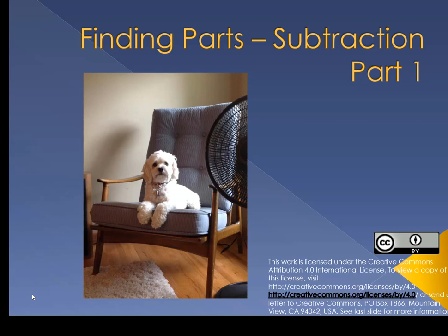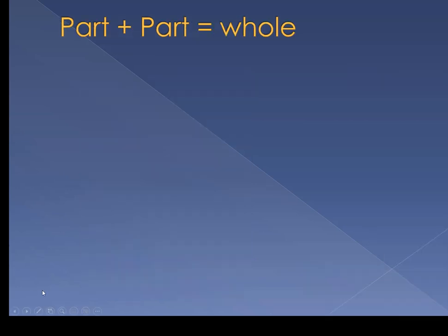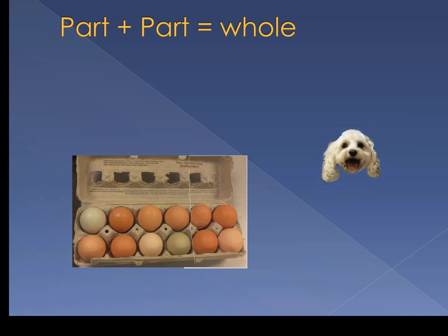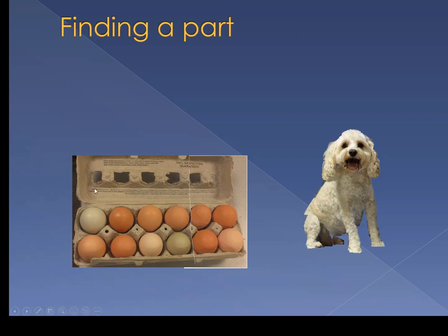Finding parts subtraction. We've already learned we can add or multiply parts together to figure out a whole. We've done some adding. Eight eggs plus four eggs is twelve eggs. Gravity's head plus Gravity's legs plus Gravity's body is the whole Gravity. What about the opposite?